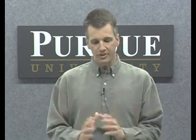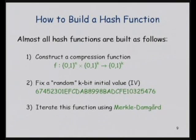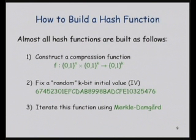This is the way almost every hash function that we use is built — we build them out of a compression function. A compression function is another hash function, but it doesn't take all-length strings; it takes very specific inputs. The compression function here is called F, and it takes two inputs: an N-bit input and a K-bit input, and it outputs K bits. So it compresses N plus K bits down to K bits. These things are designed by hand by the hash function designer.